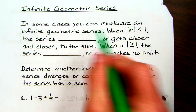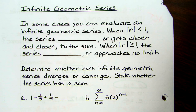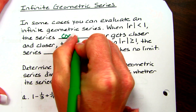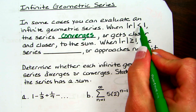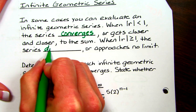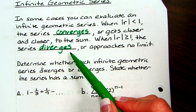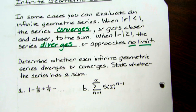In some cases you can't evaluate an infinite geometric series. If the absolute value of R is less than 1, then the series will converge — it gets closer and closer to the sum. When the absolute value of R is greater than or equal to 1, the series diverges, or approaches no limit. You can evaluate one when it's converging; you can't when it's diverging because it just keeps getting bigger and bigger.